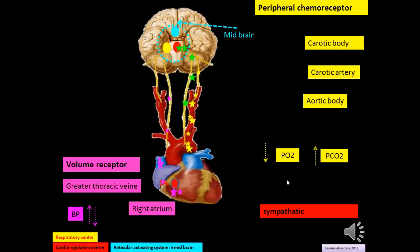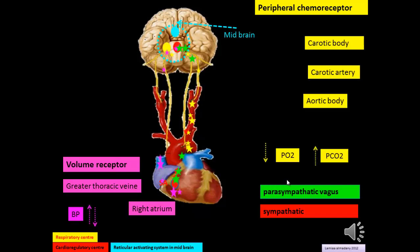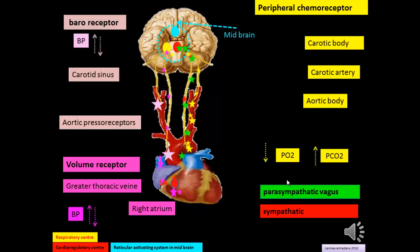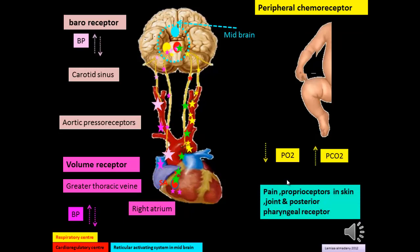Another receptor affecting the cardioregulatory center is the volume receptor, located in the greater thoracic vein and the right atrium, under the influence of fluctuations in blood pressure. The baroreceptors, located in the carotid sinuses and aortic arch, are also under the influence of blood pressure fluctuations and send impulses to the cardioregulatory center.